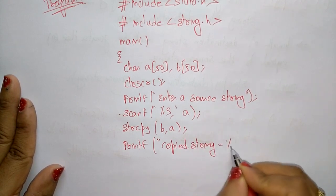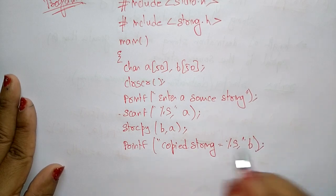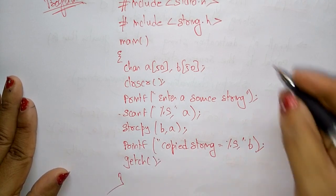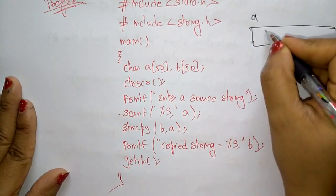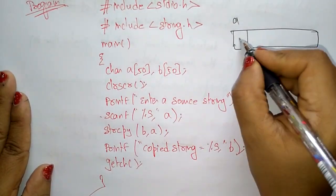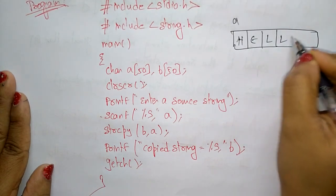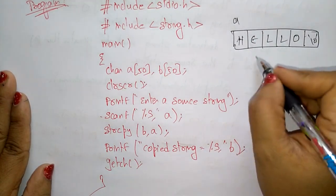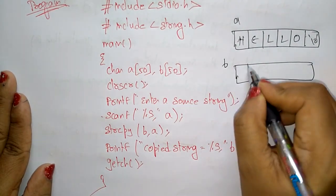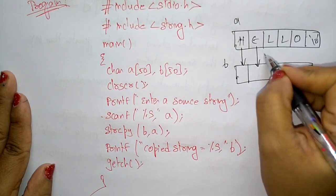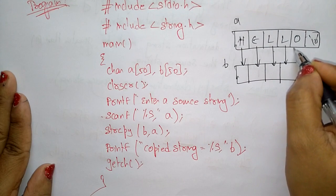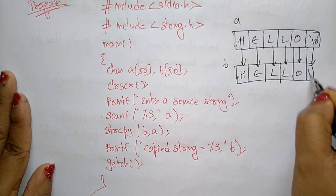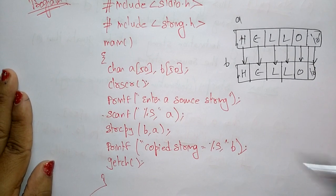After copying, we print the result using printf("Copied string = %s", b) and close the main function. For example, if the user enters "hello", array a stores h, e, l, l, o followed by a null character indicating the end of the string. After strcpy, array b will also contain h, e, l, l, o with a null character.